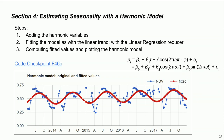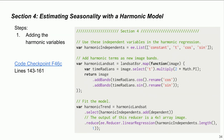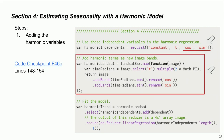In section four, we estimate seasonality with a harmonic model. First, we add harmonic variables — cosine and sine — as the third and fourth coefficients in the model equation. Second, we fit the model using the linear regression reducer, just as before. In the code, cosine and sine are added as independent variables and their values are added as bands to each image in the collection. Time is also converted to radians here, which is very important. This time we produce a four-band image instead of a two-band image.